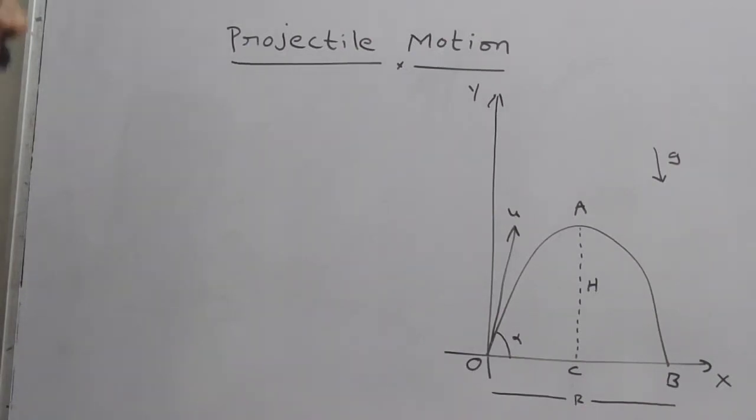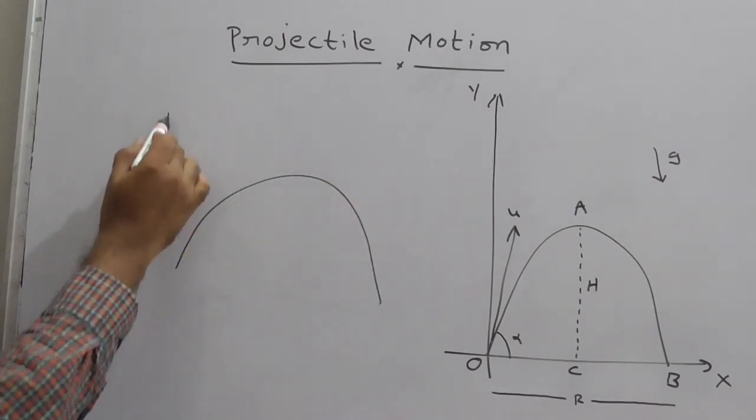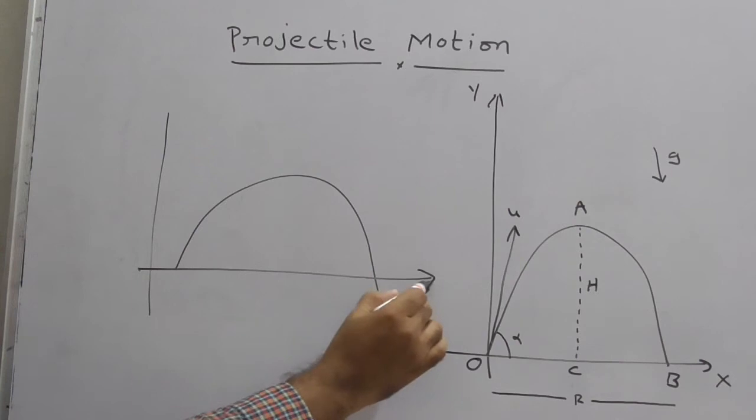Projectile motion is a two-dimensional motion, that is, motion of a particle constrained in a plane XY. Projectile motion is two-dimensional, meaning it has two types of motion.